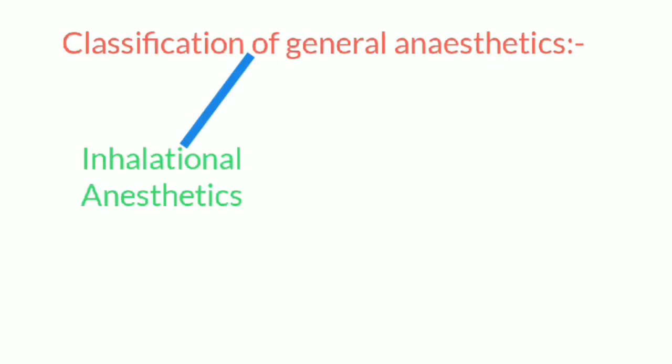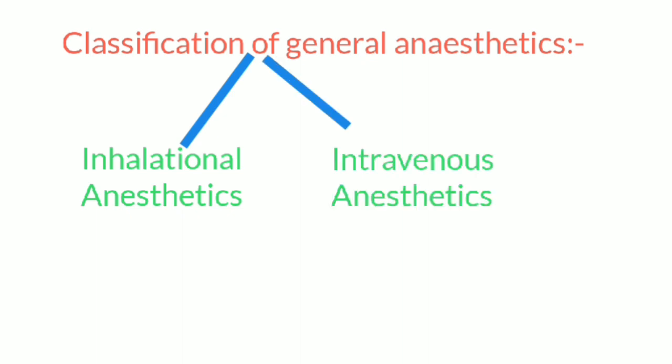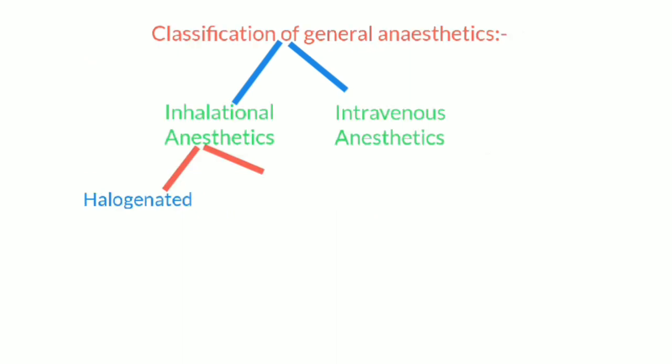Classification of general anesthetics drugs according to the mode of administration: it is classified into two types. First, inhalational anesthetics; second, intravenous anesthetics. Inhalational anesthetics are further divided into two types: first, halogenated; second, non-halogenated.